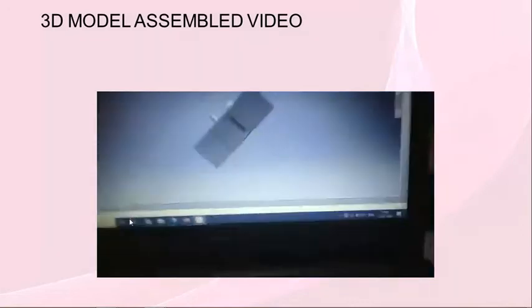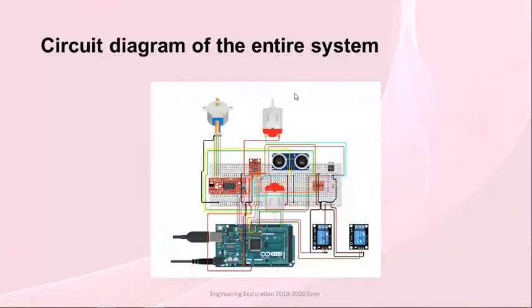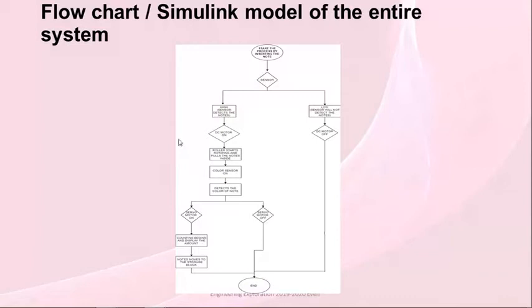This is the circuit diagram of our entire system. As you can see, we have used Arduino, relays, DC motors, servo motor, and sensors. This is the flowchart — the process starts, the sensor detects the note and goes high; it goes low when the sensor does not detect the note. The DC motor turns on, the roller starts rolling, after which the color sensor turns on and detects the color of the note.